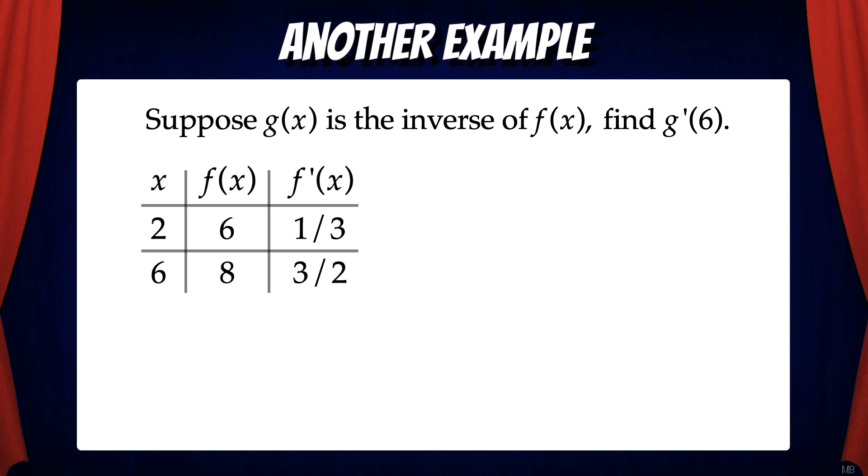So let's start out by writing the formula for the derivative of an inverse function at a point. g prime of b equals 1 over f prime of g of b.